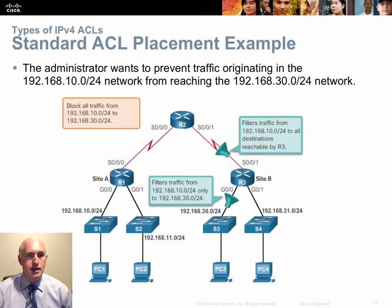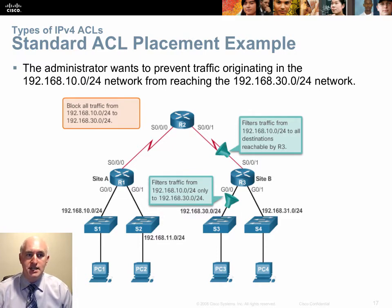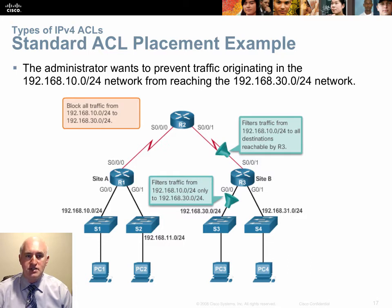Here's an example of using a standard ACL. If the goal is to prevent traffic originating in the 10.0.0.0 network from reaching the 30.0.0.0 network, a standard ACL can't specify destinations, so it has to be placed as far as the G0/0 exit interface of Router 3 — as far from the source and as close as possible to the destination. All other locations would be ineffective.